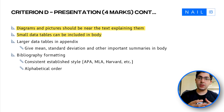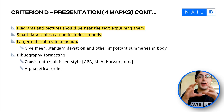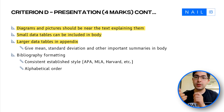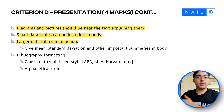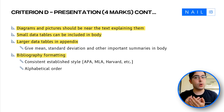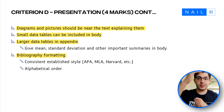Small data tables can be included in the body, but larger ones should be placed in the appendix. Summaries of larger data sets — including things like mean, standard deviation, and interquartile range — should be included in the actual body. Reference the appendix in the essay by saying something like 'see appendix A for the full data set.' For bibliography formatting, use a consistent established style such as Harvard, APA, or MLA, and make sure the bibliography is in alphabetical order.